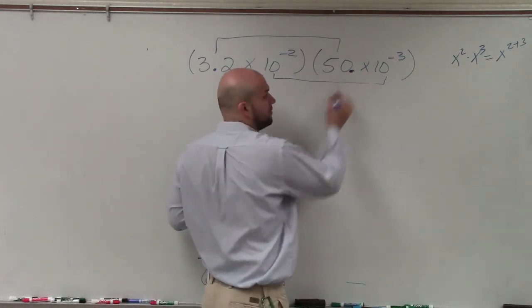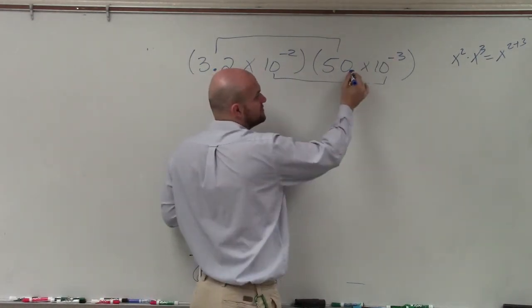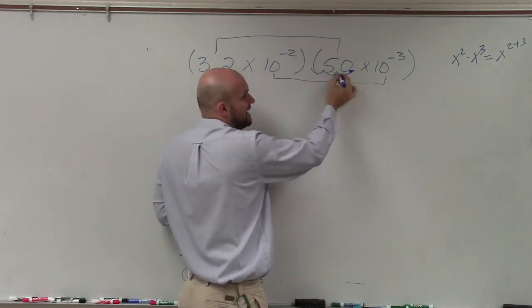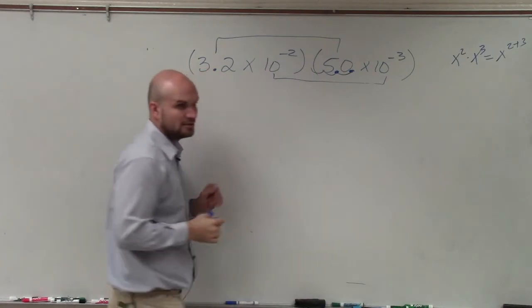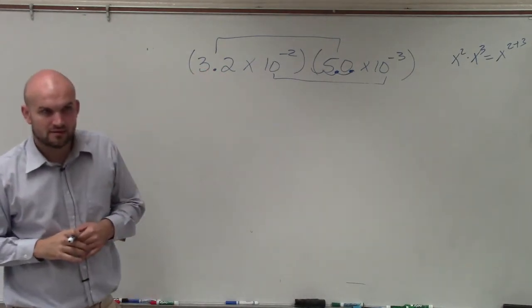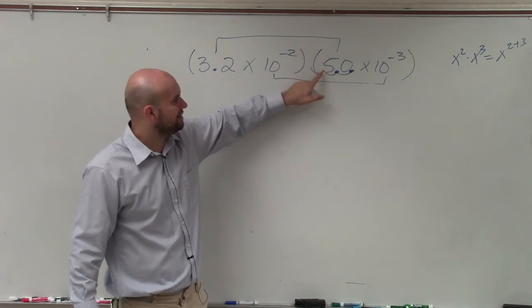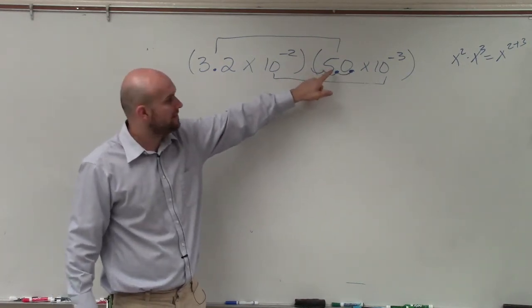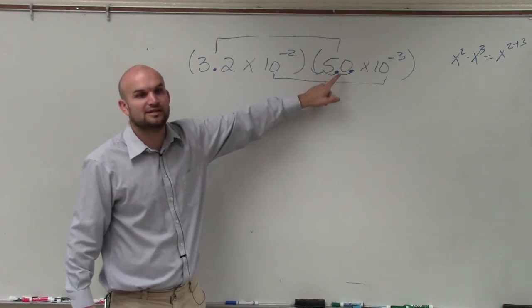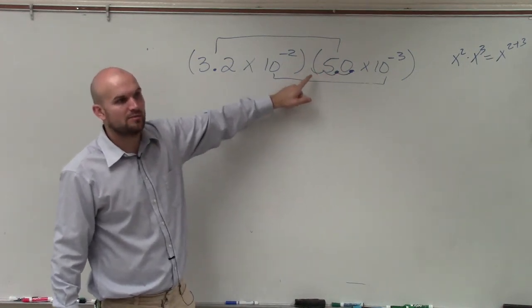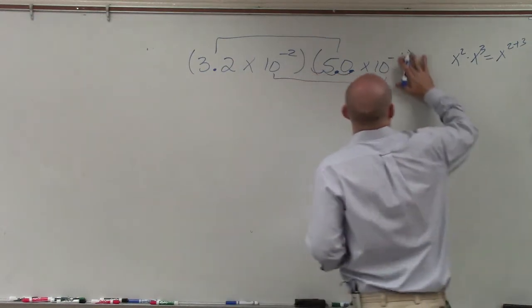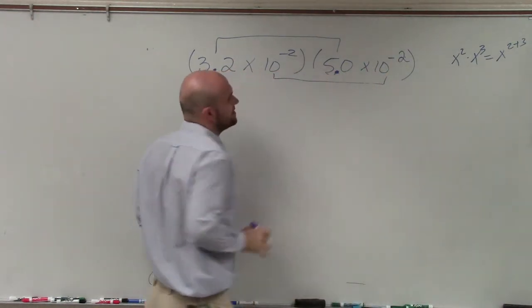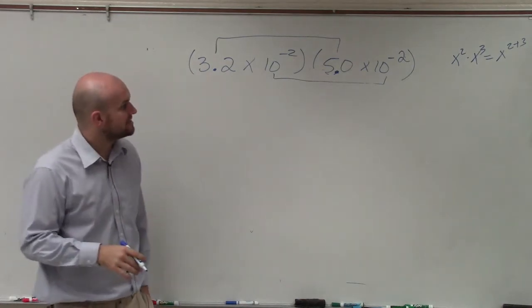So my decimal point is right there. Now this says move it over three units. But to make this in scientific notation, I need to move the decimal point over here. So if I originally wanted to go over three units, but now I'm already moving it one to the left to put it in scientific notation, that means I only need to move it over two more times. So I'm going to write this as 5.0 times 10 to the negative second.